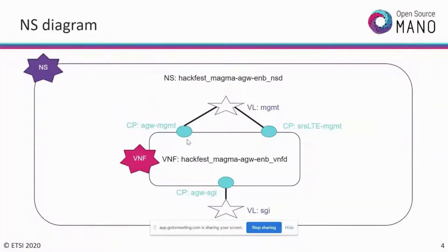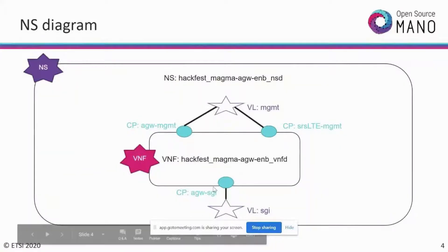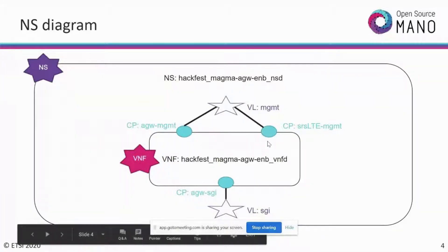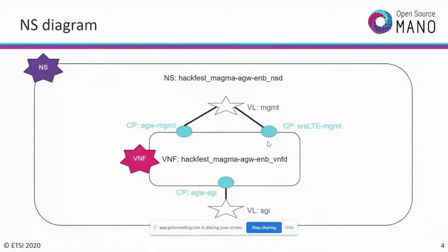Managing both VDUs, we expose different management interfaces from each: the first connection point is access gateway management and the second is SRS-LTE management. Both these connection points are exposed from our VNF. The third connection point, connected to our router, is exposed as a connection point to be used for the SGI network. This is the whole picture of our VNF.